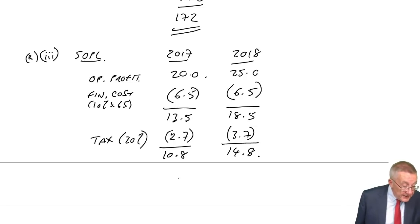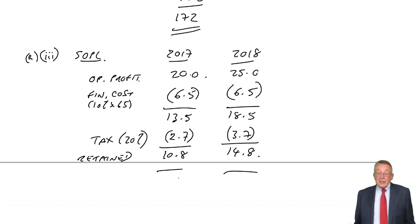Leaving profit after tax, 10.8, 14.8. What about dividends? I think it said somewhere they're not going to pay a dividend. Yes, no dividends will be paid for these two years in note 6. And so there is the retained profit. So again, I'm sorry, but apart from obviously the time it takes to read, there's a lot there, two pages of information. Apart from that, that's a very easy four marks.